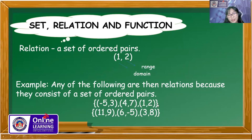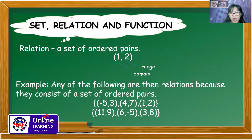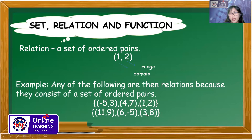I have a set of ordered pairs: (negative 5, 3), (4, 7), and (1, 2). In this first example, the first components — the domain — are negative 5, 4, and 1. The range — the second components — are 3, 7, and 2. In the second example, the domain or first components are 11, 6, and 3, and the range is 9, negative 5, and 8. These examples are relations because they consist of ordered pairs.